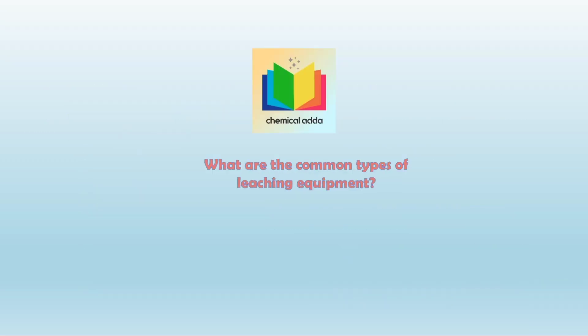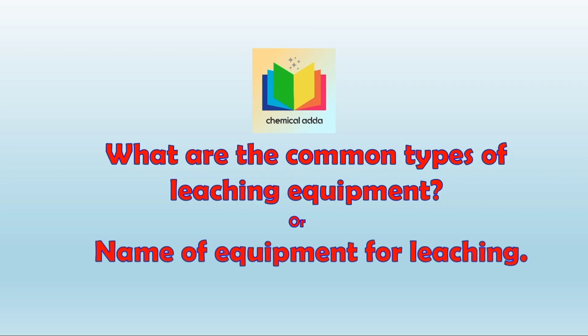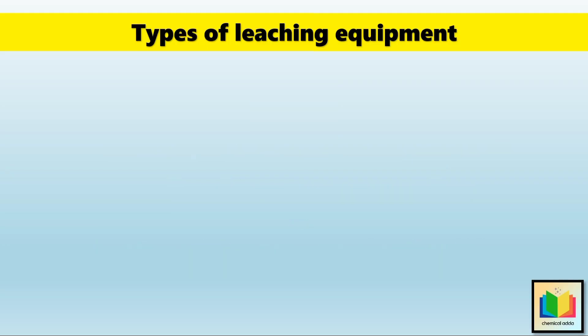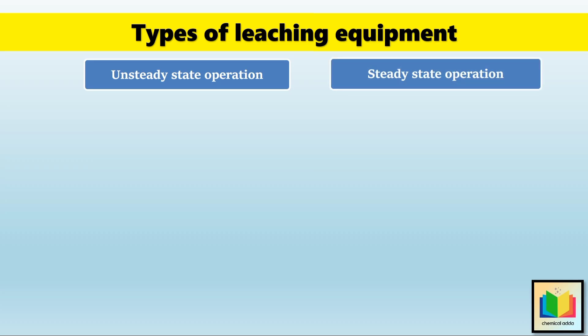What are the common types of leaching equipment? Leaching is the process of extracting a soluble substance from a solid by using a liquid solvent, and the choice of equipment depends on the material. Leaching operations are carried out in two ways: the first is unsteady state leaching, also called a batch process, where the process happens in separate steps. The second is steady state leaching, also called a continuous process, where extraction happens non-stop.